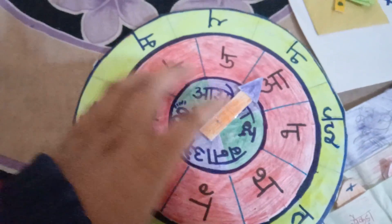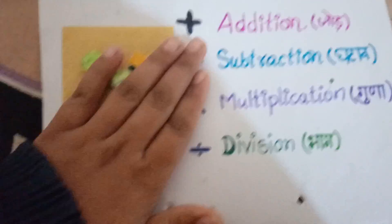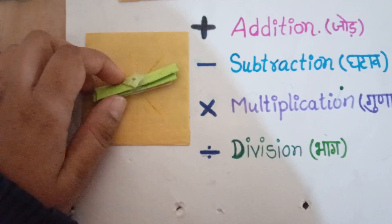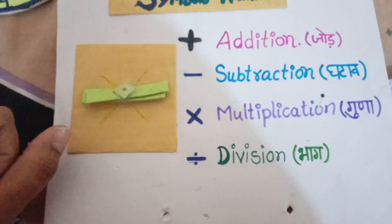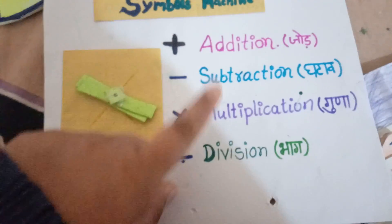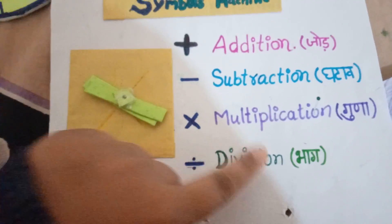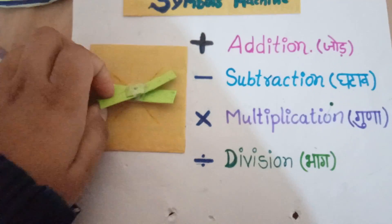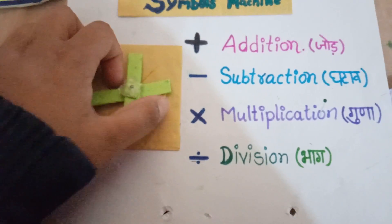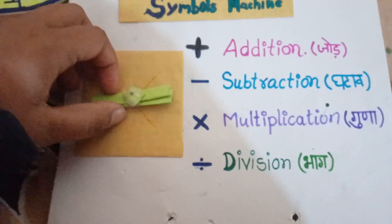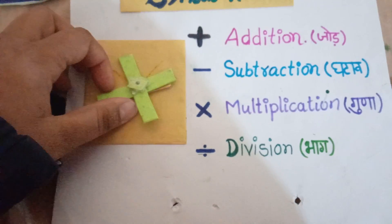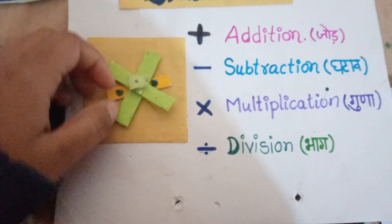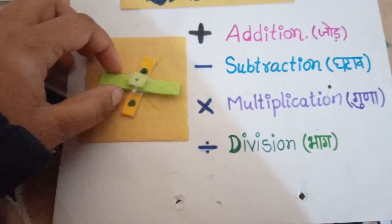Next is this symbolic machine — you can show children the important symbols of mathematics. This is addition or plus, subtraction or minus, multiplication or into, and this is division. We will show the symbol of addition, subtraction, multiplication, and division.